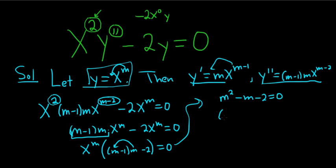So this should factor. Let's try it. So m, m. We need two numbers that multiply to negative 2 and add to negative 1. I think negative 2 and 1 should do the job. Yep. So we get two possible answers: m equals 2 and m equals negative 1.